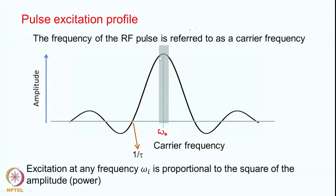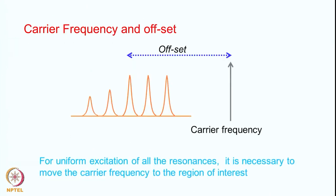Excitation happens to a certain region around the spectral width. Now suppose you have a carrier frequency at one position, but your signal of interest lies somewhere else — then that spin is not excited properly by the excitation pulse. Therefore, one has to shift omega naught to the location of interest; otherwise signals will not be excited uniformly, as we will see in the next slide.